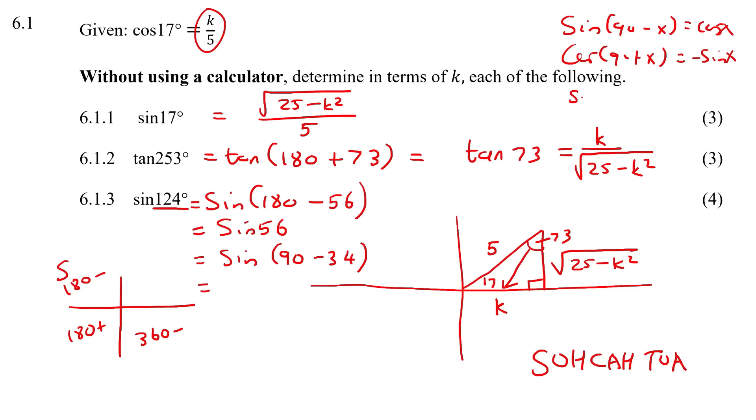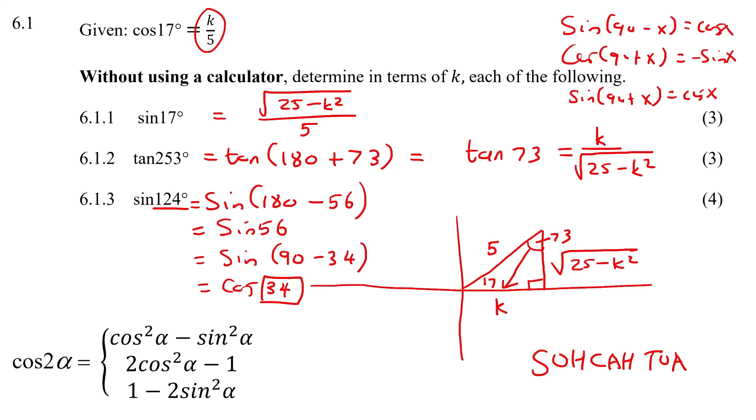If I have sin of 90 minus, then I know that just becomes cos of that angle. Now we are in a good space because I know that 34 is double 17, and so I should be thinking about double angle. Let's go get our double angle formulas. You're pretty much free to use whichever one you like. I already know what sin is and I also have cos, so you could use any one you like.